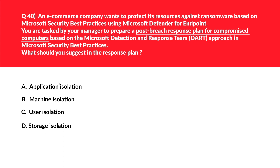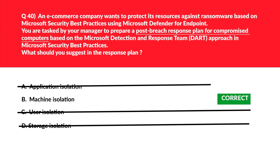We are at question 40. Option A — application isolation — refers to preservation of existing systems, not a post-breach response plan for compromised computers as the question requires, so A is out. Options C — user isolation — and D — storage isolation — are completely out of context per the scenario, so both are out. We are left with option B: machine isolation, which is locked as the correct answer.